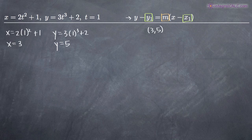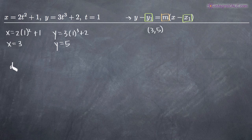Now, if we want to find the slope m, we need to take the derivative of the curve, dy over dx. Normally the derivative is dy over dx, but since we have parametric equations, we're going to put the derivative of y in the numerator and the derivative of x in the denominator.